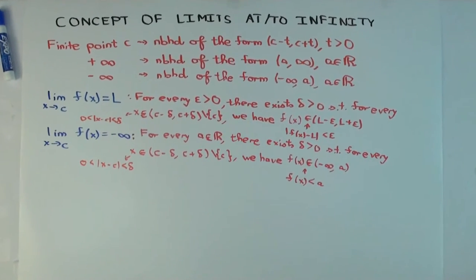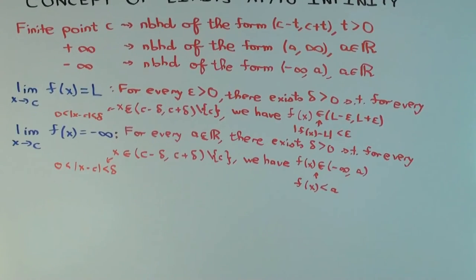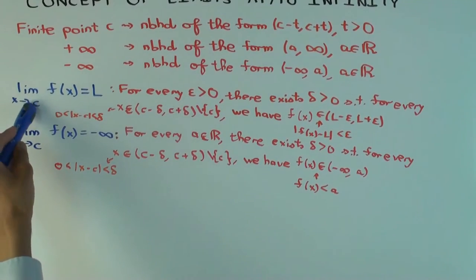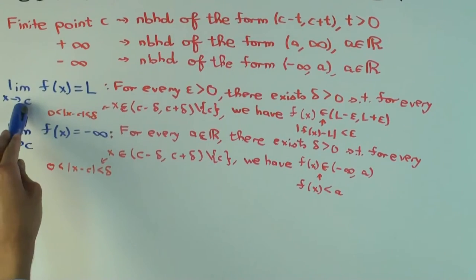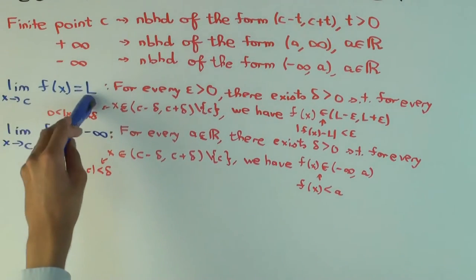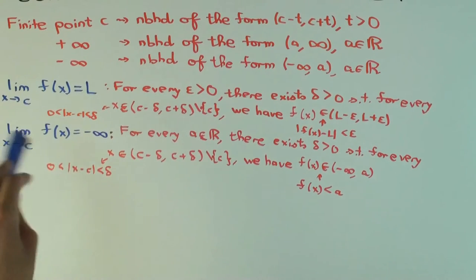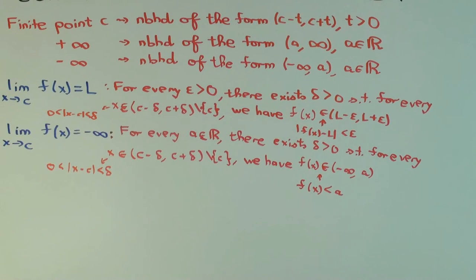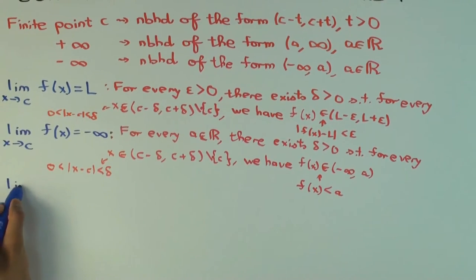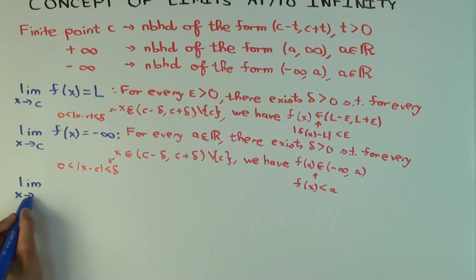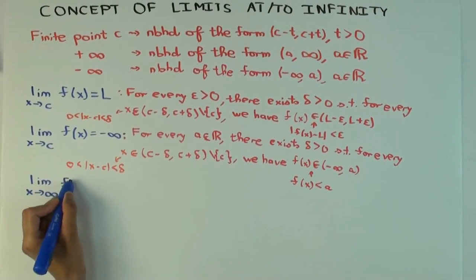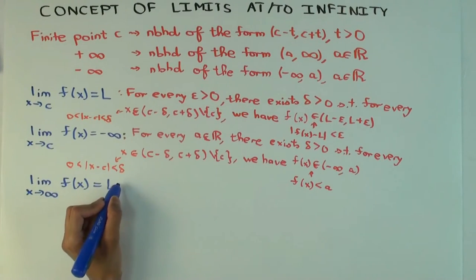There are a bunch of other combinations — a total of nine — because on the domain side you could have a finite point, plus infinity, or minus infinity, and on the target (range) side you also have three options: finite point, plus infinity, or minus infinity. That gives three times three, which is nine possibilities. Let me do one more: the limit where the domain side goes to infinity but the target value is finite.